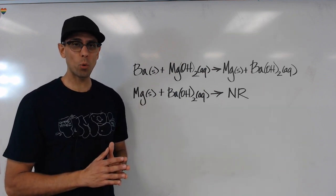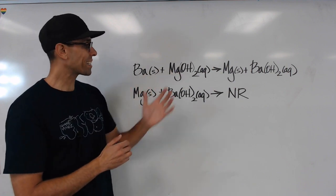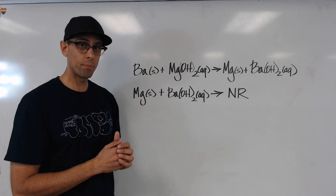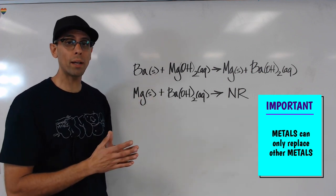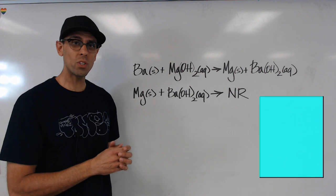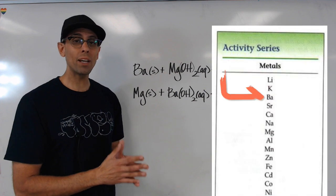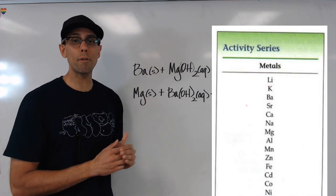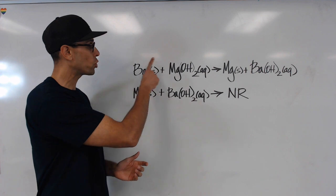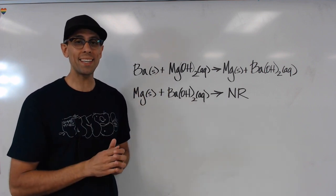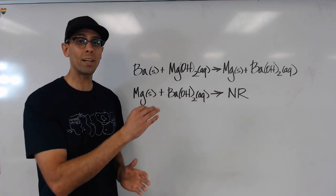Let's take a look at the two reactions on the board. In the first one, the single element is barium, and it's reacting with the compound magnesium hydroxide. Because barium is a metal, it has the potential to replace magnesium, also a metal. But we have to look at the activity series to see whether or not barium is more active. We notice on the activity series that barium is higher up on the chart — it's above magnesium. That tells us it is more active and therefore will be able to replace the magnesium, which is why on the product side the magnesium is now alone and we have a new compound, barium hydroxide.